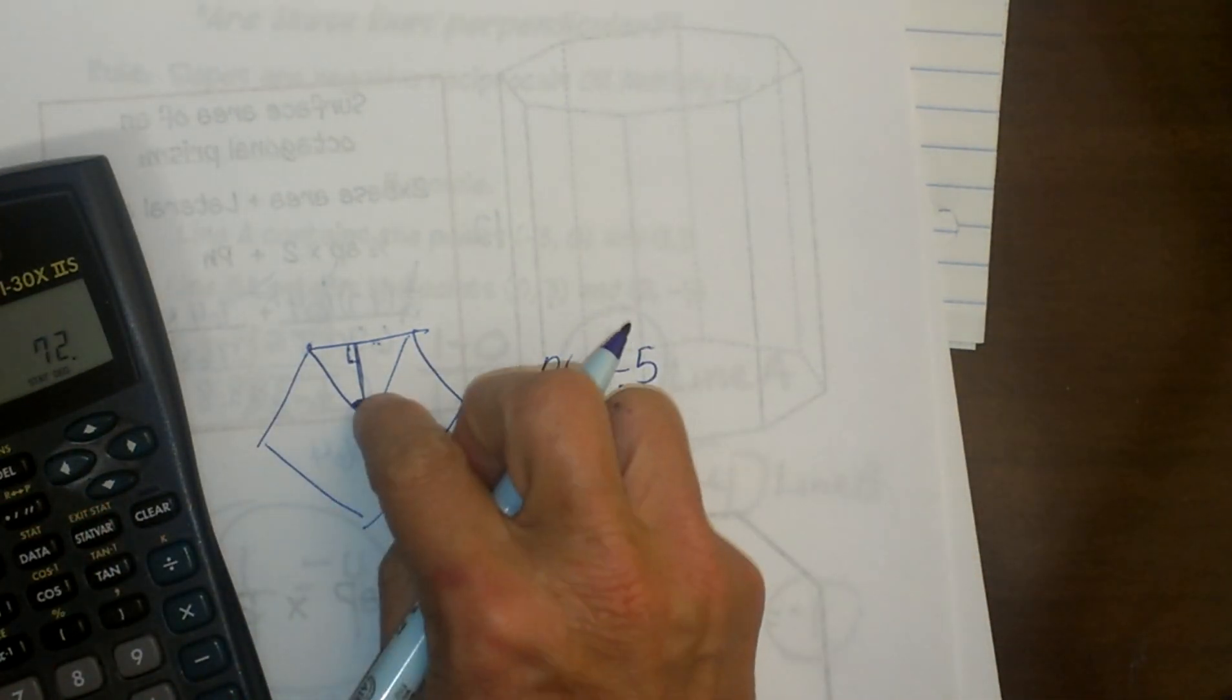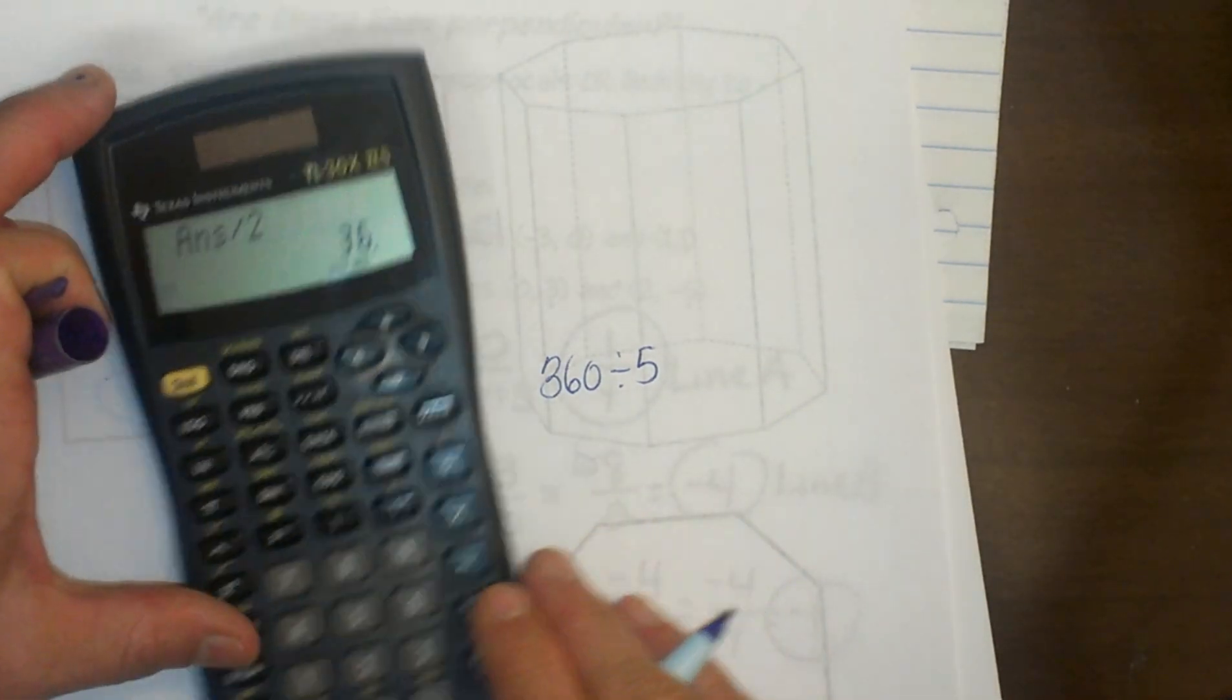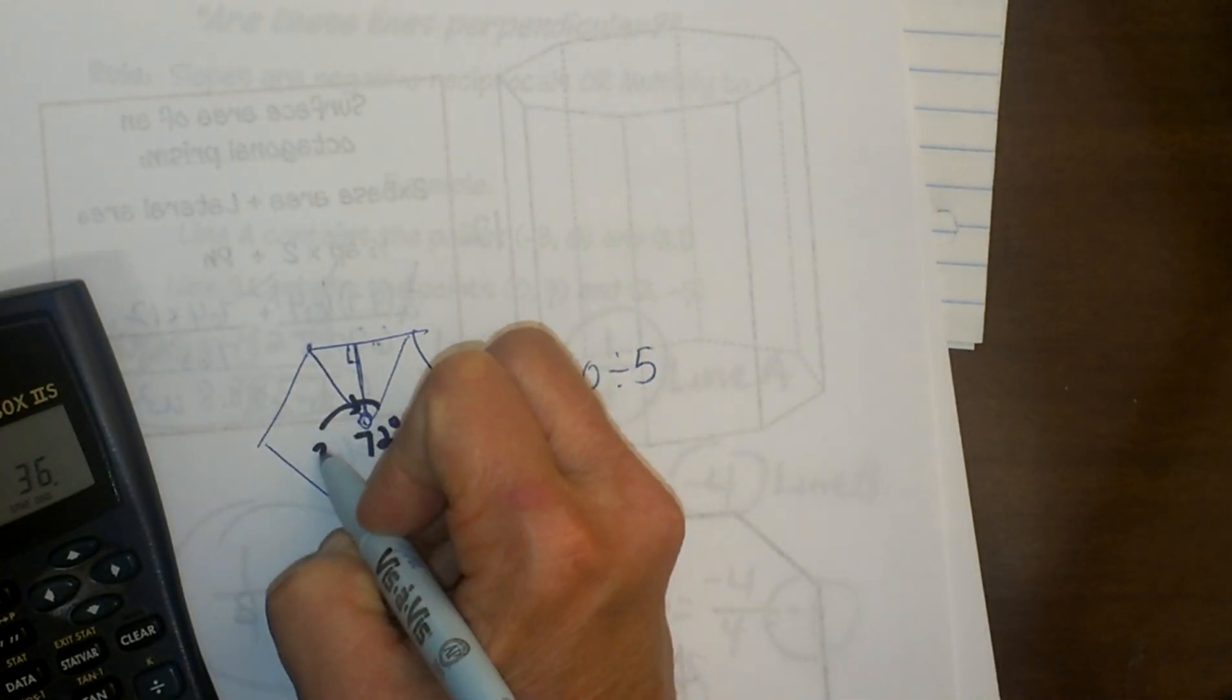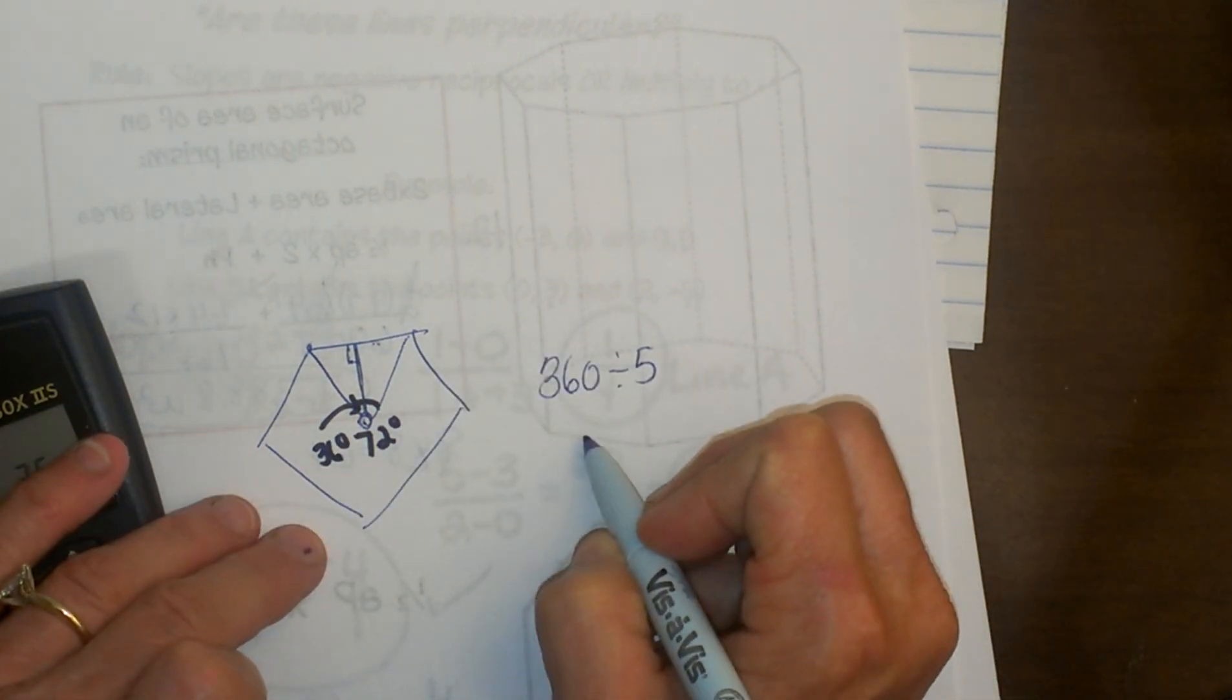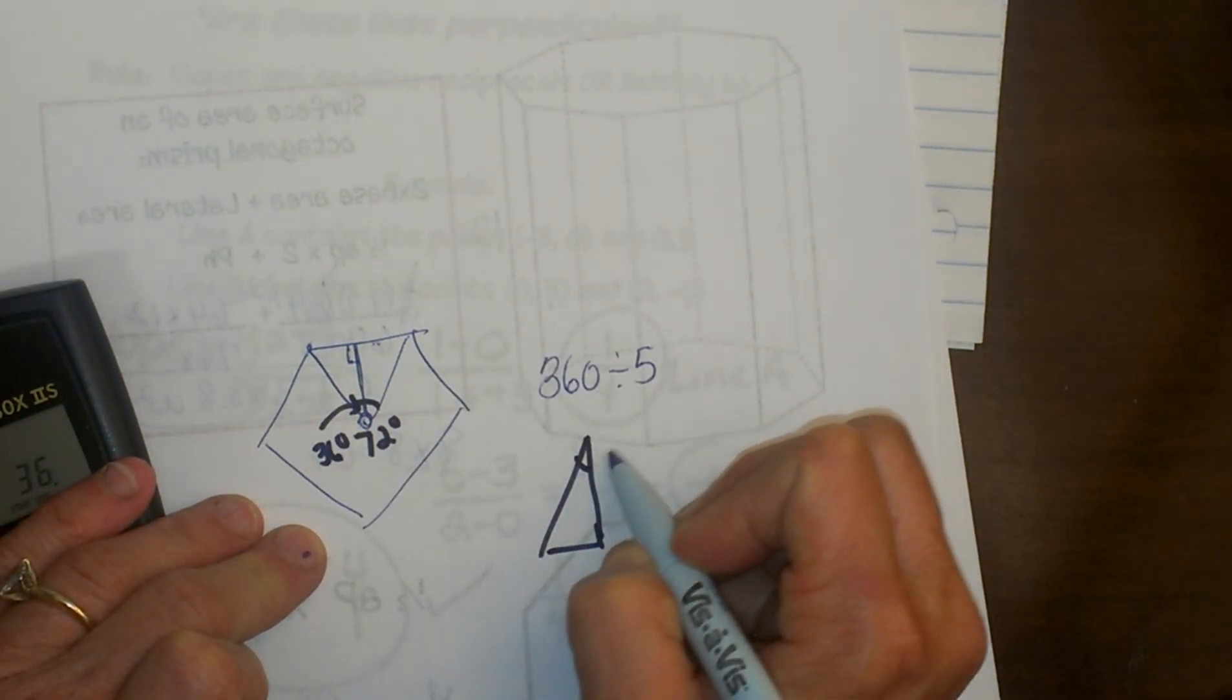But then you have to split it in half, so divide it by 2. That means that central angle you would work with would be only 36 degrees. So the triangle that you would work with would have an angle at the top of 36.